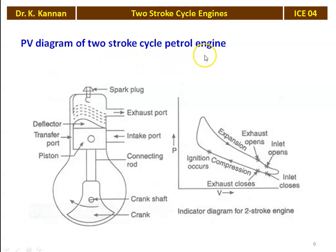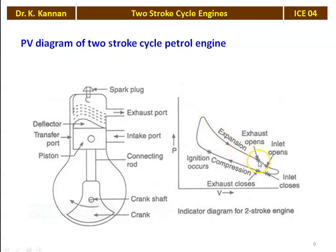Looking at the PV diagram of the 2-stroke cycle petrol engine alongside the piston-cylinder arrangement: starting from the bottom dead center, as the piston moves toward TDC, first the inlet valve closes, then the exhaust valve closes, then ignition occurs and combustion takes place. As the piston moves from TDC, expansion occurs. The exhaust valve opens and the inlet valve opens, and fresh air-fuel mixture enters the engine cylinder. This covers one stroke from BDC to TDC and another from TDC back to BDC.